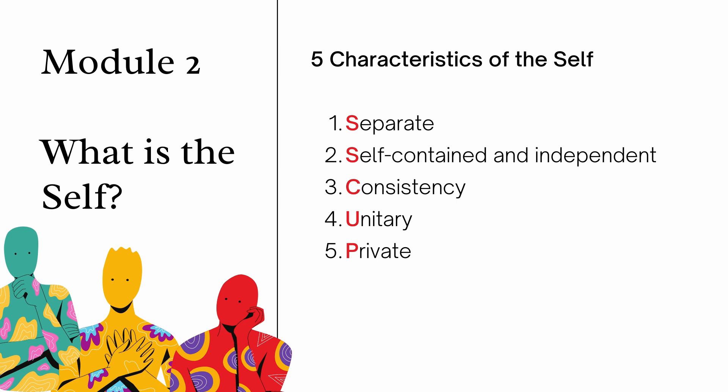Number four, the self is unitary because it is considered the center of all experiences and thoughts that run through a person. The self controls and processes all your thoughts, everything you think about, and all the feelings and emotions that you have. And the last one, the self is private — a person deals with and processes information, feelings, and emotions within himself or herself, and this process is not seen by other people. Only you know what you are thinking and what you are feeling.